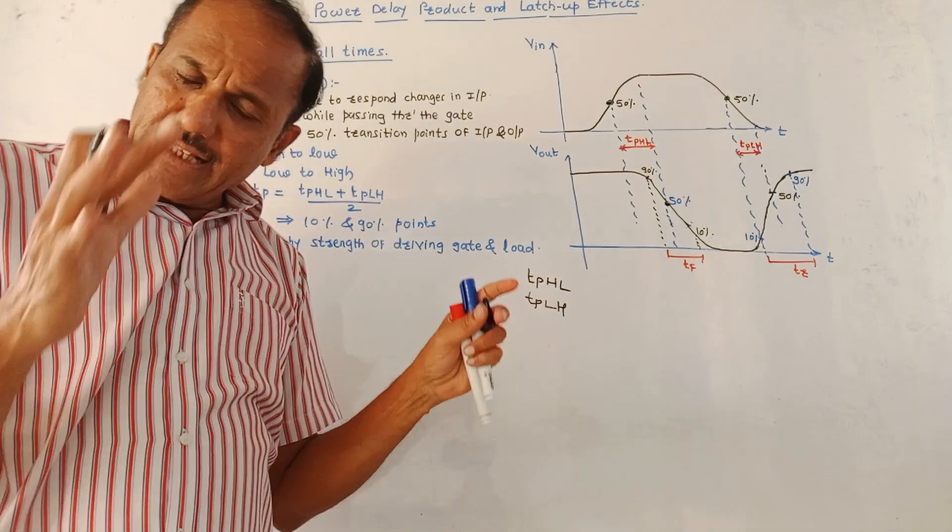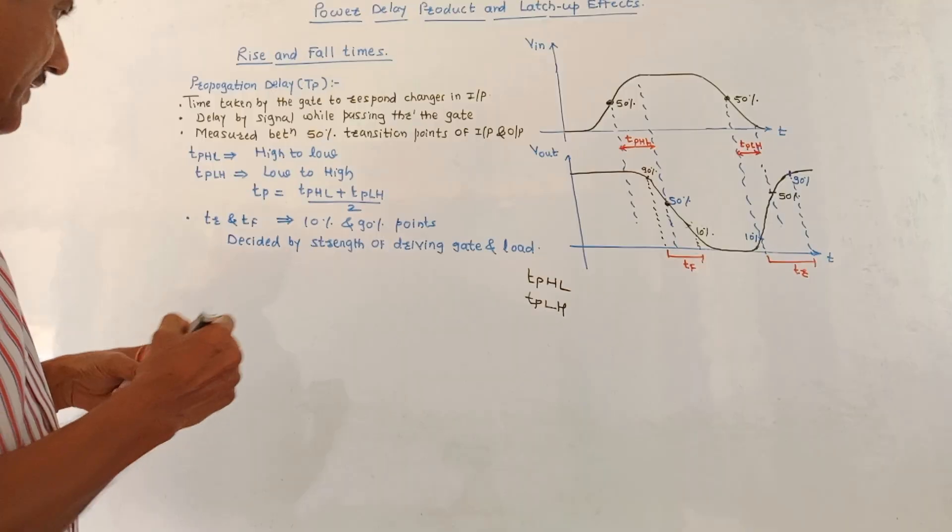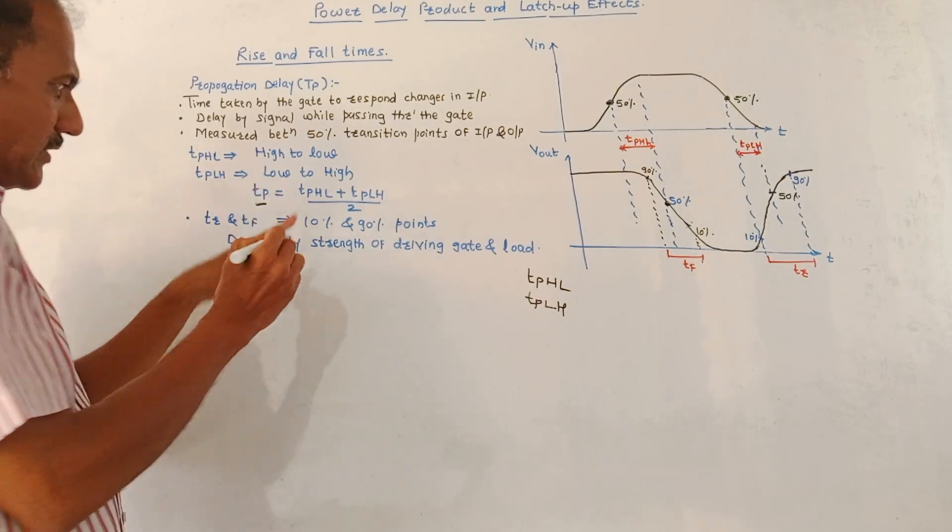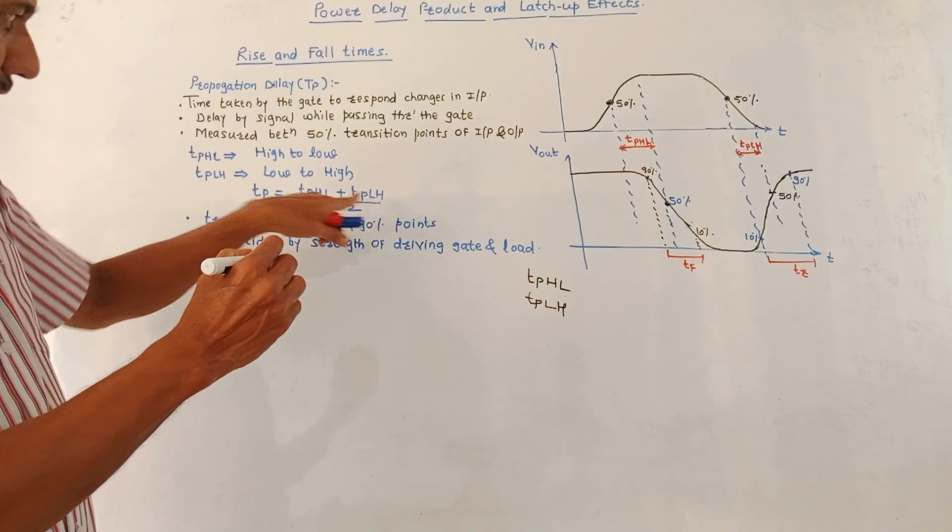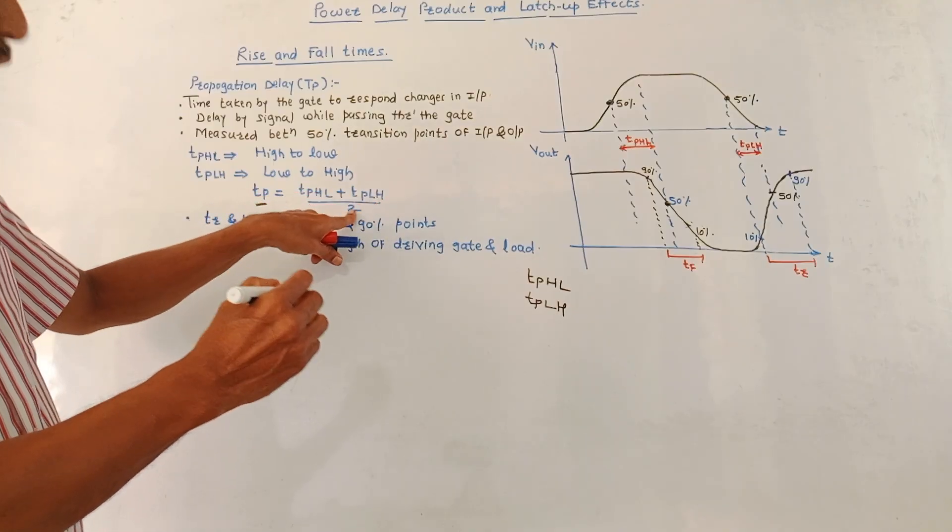The propagation delay is average of these two values. It is defined as TP equals TPHL plus TPLH divided by 2.